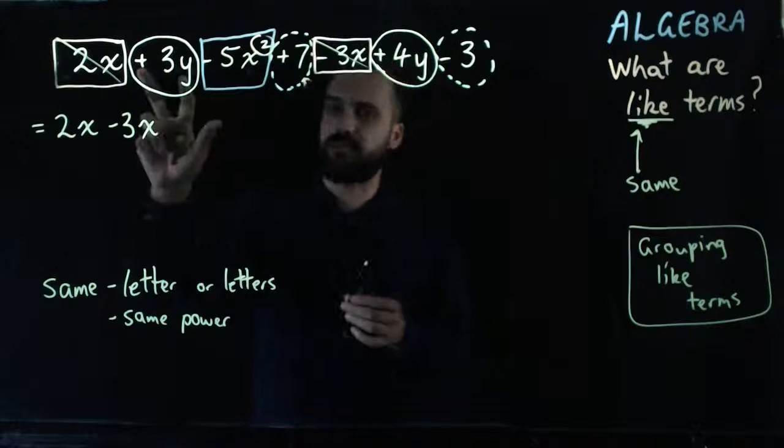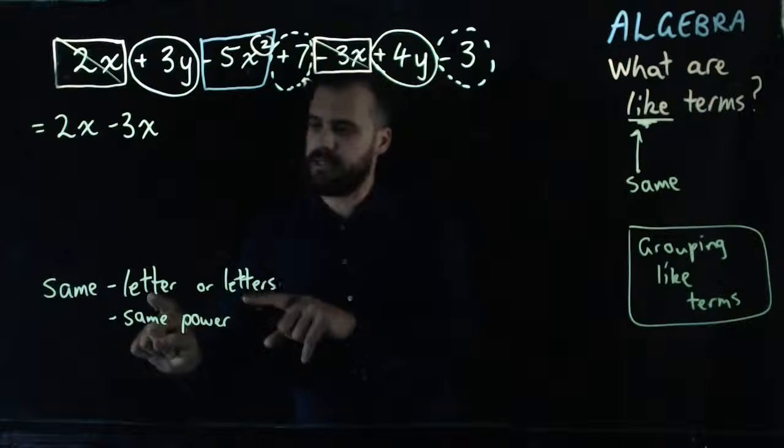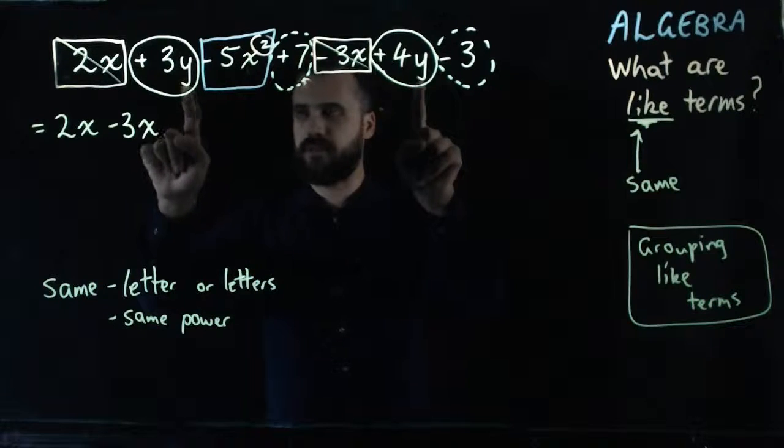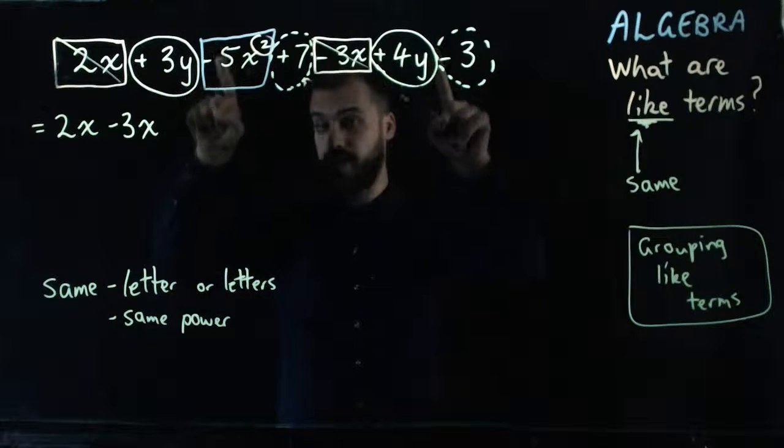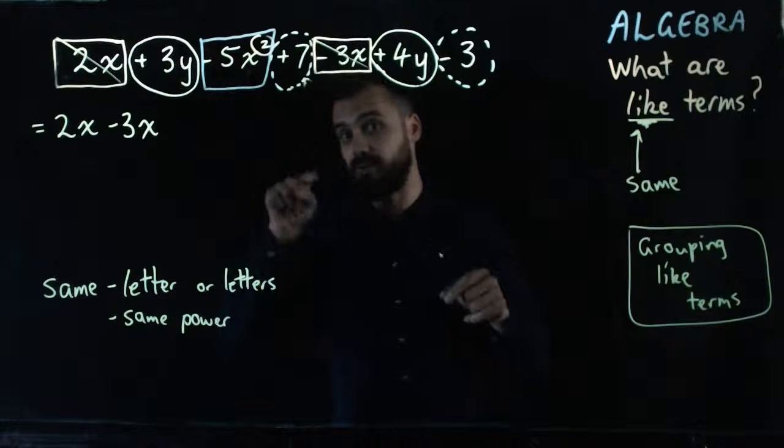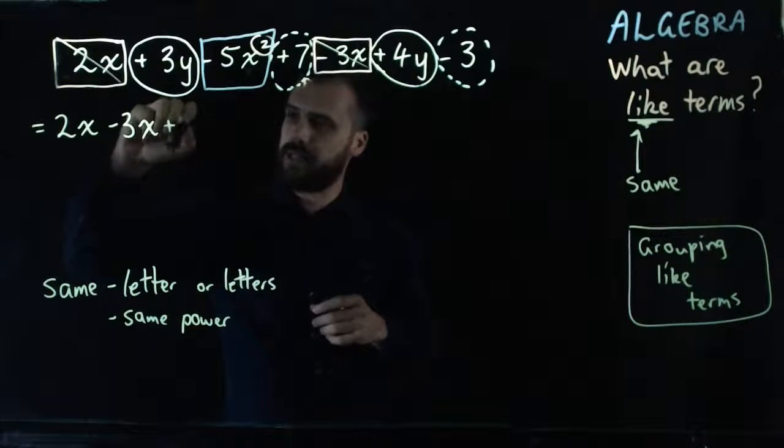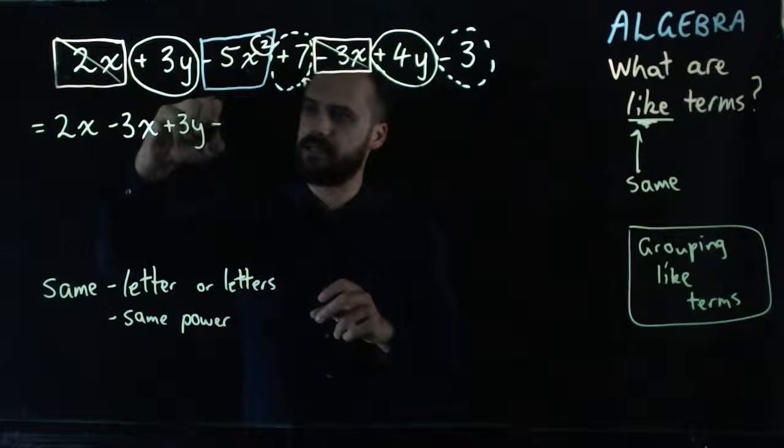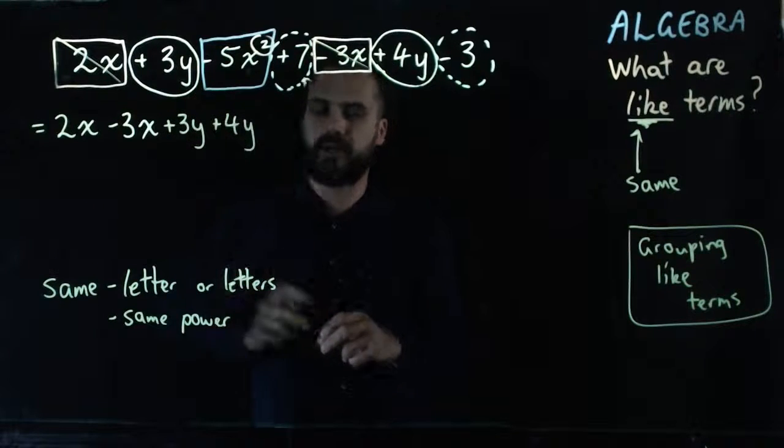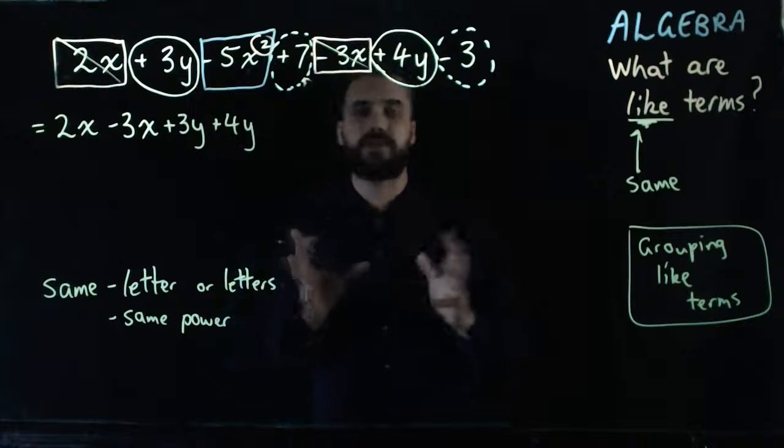Let's group some other ones. 3y, 4y. Really, it's plus 3y and plus 4y. Now, look. Same letter and same power. In this case, there's no power there, or more accurately, there's the power of 1, but you don't have to write that. So we've got plus 3y and plus 4y. We've grouped our like terms. Let's see. What else have I got here?